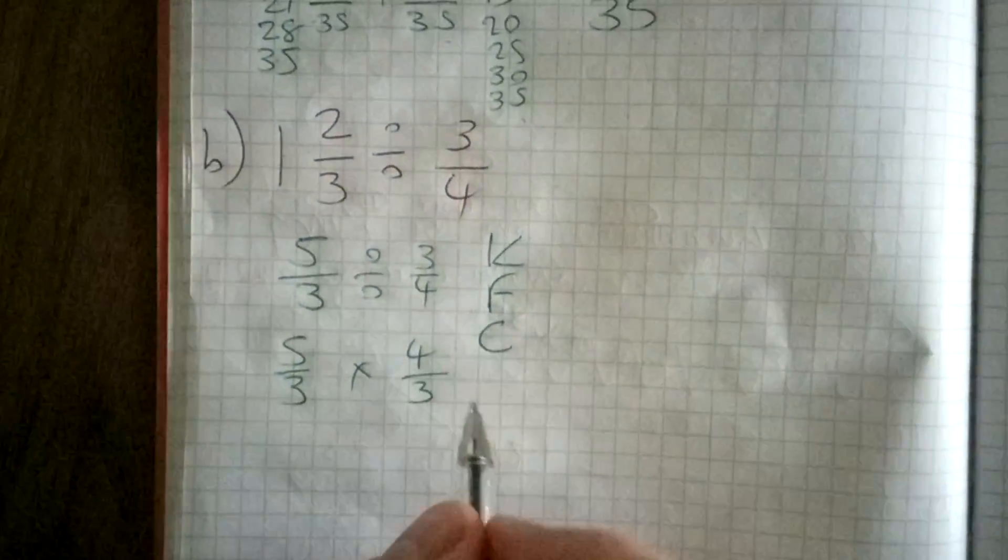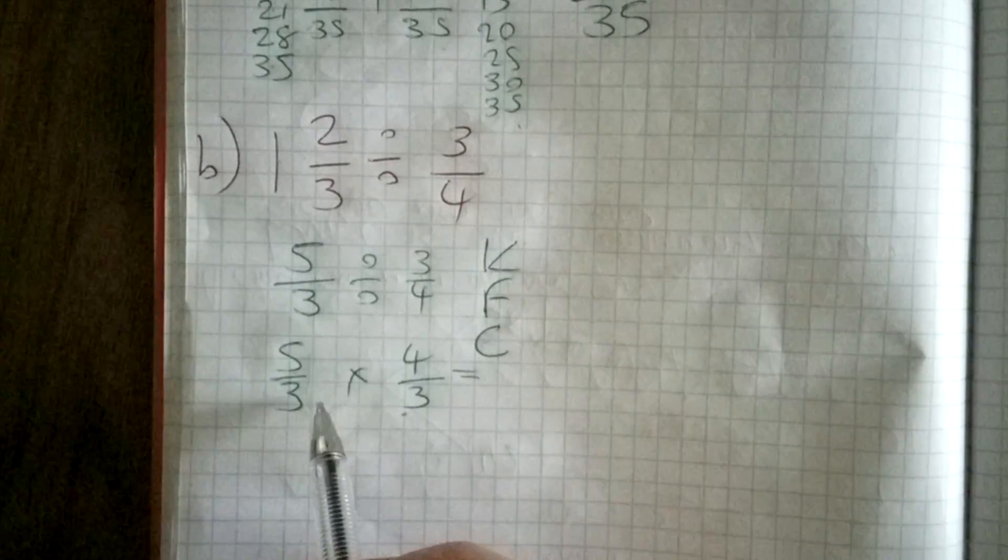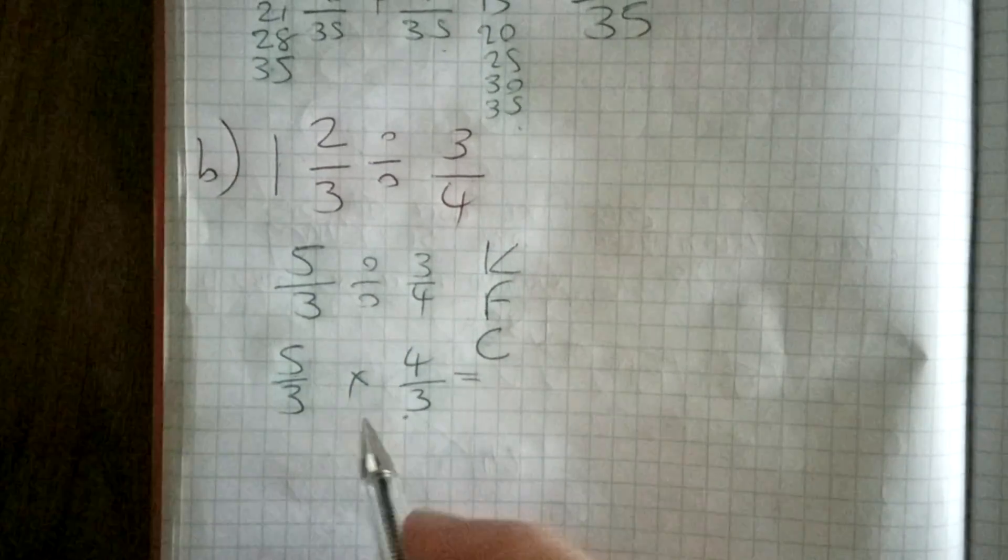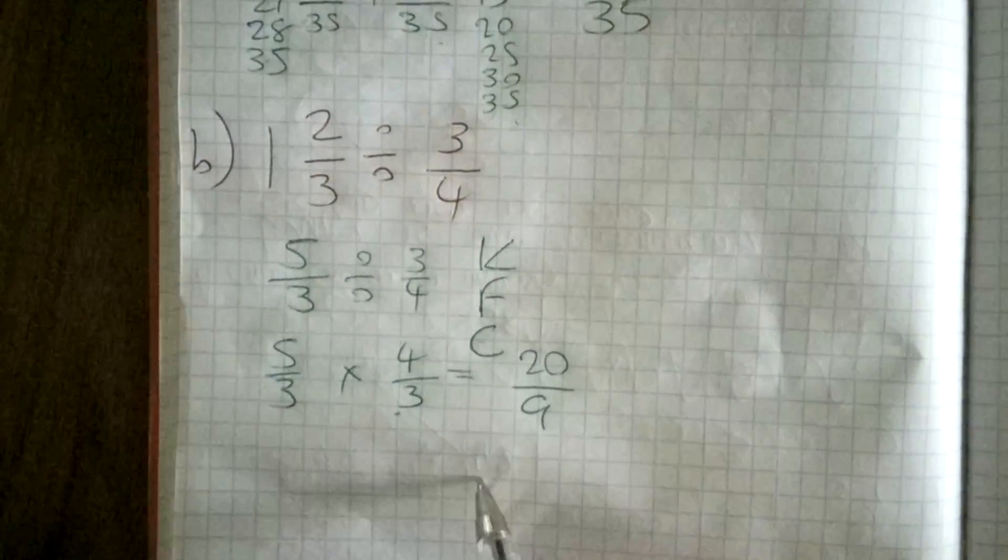Okay, now it's just top by top, bottom by bottom. Don't be confused with adding where we keep the denominator the same. 3 times 3 is 9, 5 times 4 is 20, so we get 20/9.